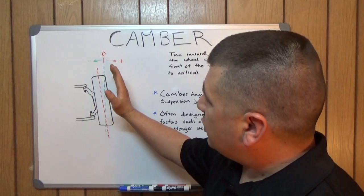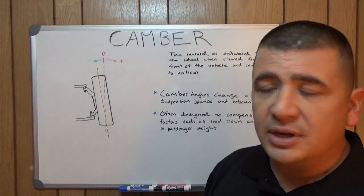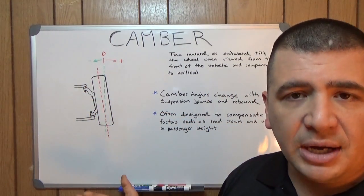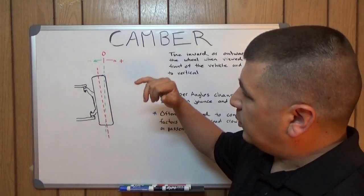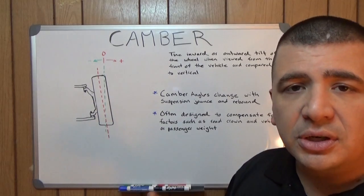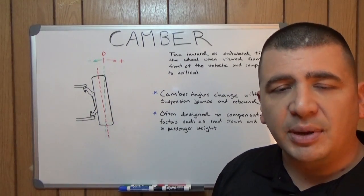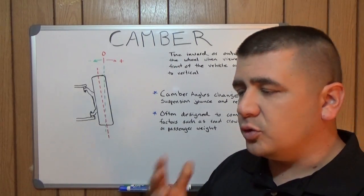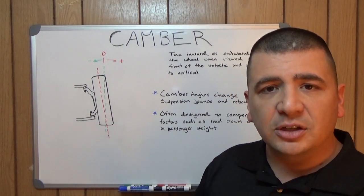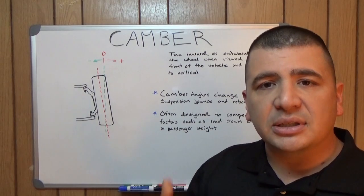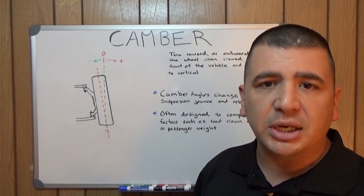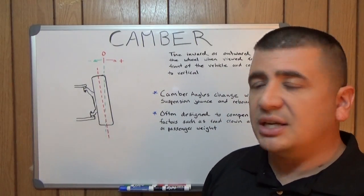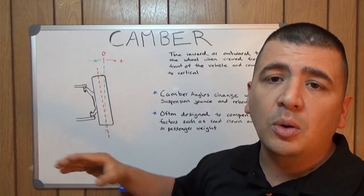So looking at camber, we've got our definition. It is the inward or outward tilt of the wheel when viewed from the front and compared to a vertical line. In this case, if you have the top of the wheel tilted inward towards the vehicle, it is negative camber. And if it's tilted outward away from the vehicle, it's going to be positive camber. Now with this style and with any suspension, you're going to see camber changes with suspension jounce and rebound.